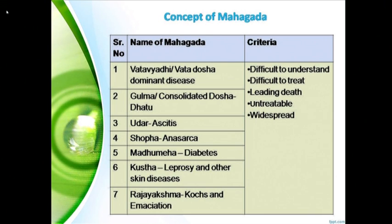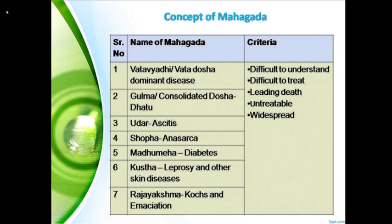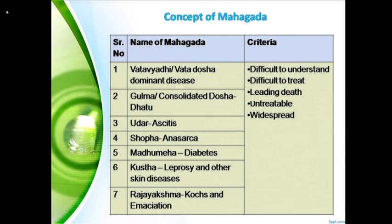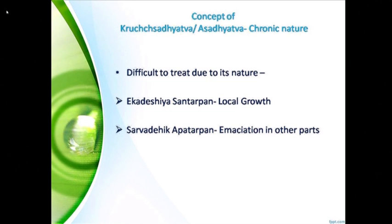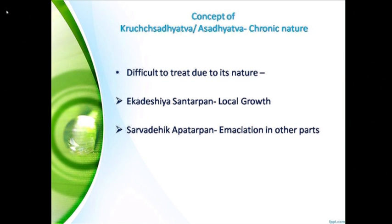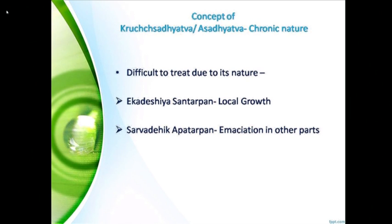The concept of maha-gatha includes vata-dosha dominant diseases — vata-yadi, gulma, udara-ascites, madhumeha, kushta, and rajakshma. What is the concept of asadhyato? Asadhyato refers to conditions that are difficult to treat due to their nature. This includes ekadeshiya-santarpana — local growth — and sarvadehik apadarpana — emensification in other parts of the body.